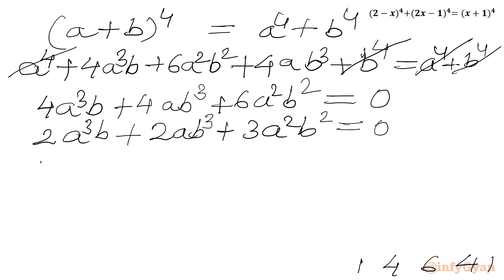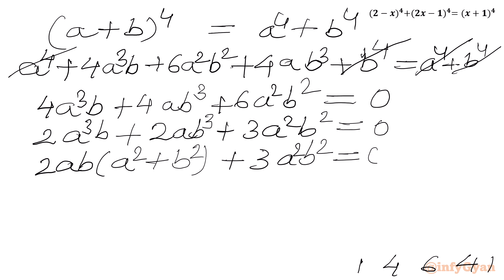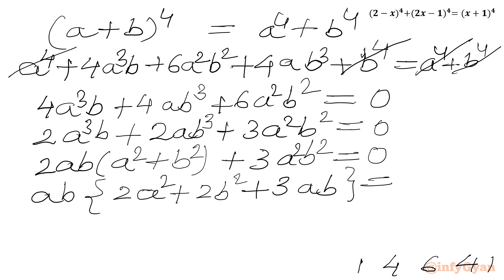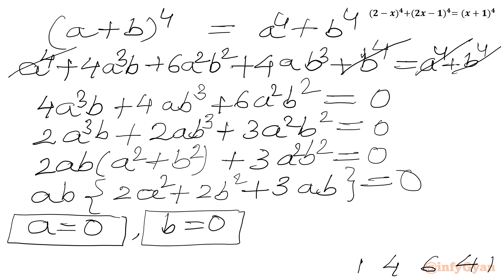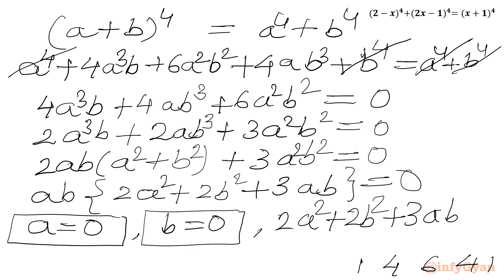Now I can factor: 2 is common from the first two terms, and ab is also common in the bracket giving a² plus b². Then we have 3 times a²b². I can take ab as common overall, so: ab times (2a² plus 2b² plus 3ab) equal to 0. From here I can conclude three cases: either a equal to 0, or b equal to 0, or 2a² plus 2b² plus 3ab equal to 0.